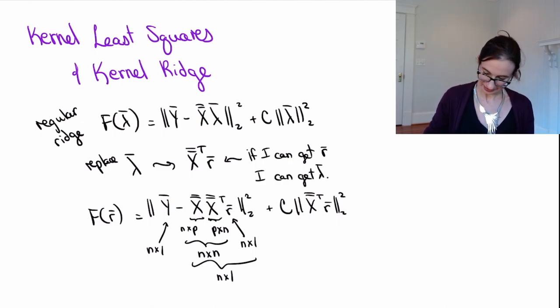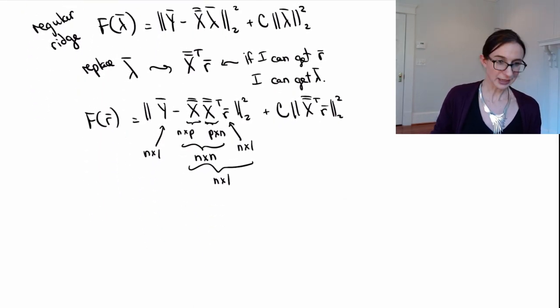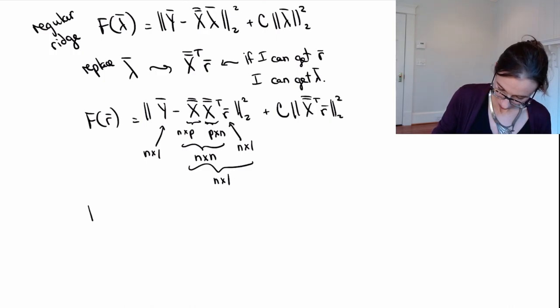Okay, neat. So now I can replace this XX transpose with the kernel. Kernel in my whatever space I want.